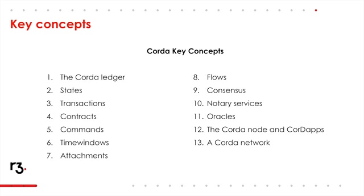We're then going to look at states, which are shared facts on the ledger that are entered into by peers or participants on the ledger. We're then going to talk about transactions — how those shared facts can evolve over time. Then, closely related, are contracts, and they ensure that shared facts evolve in a controlled manner.